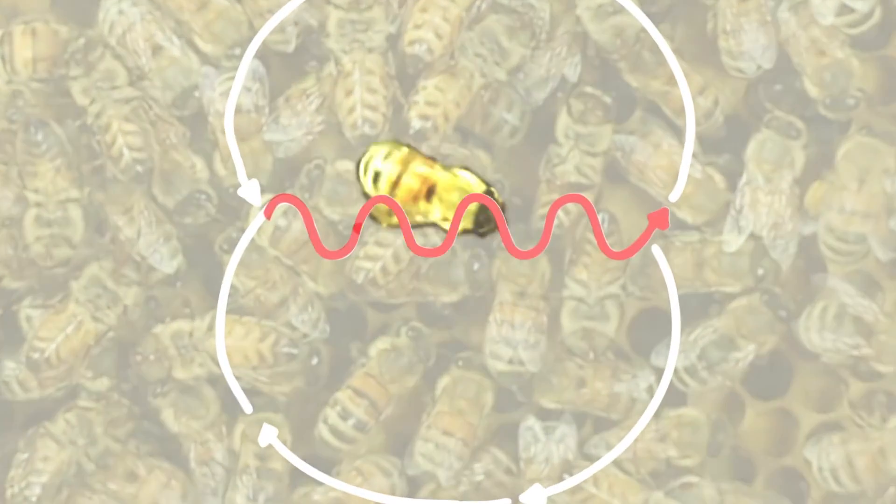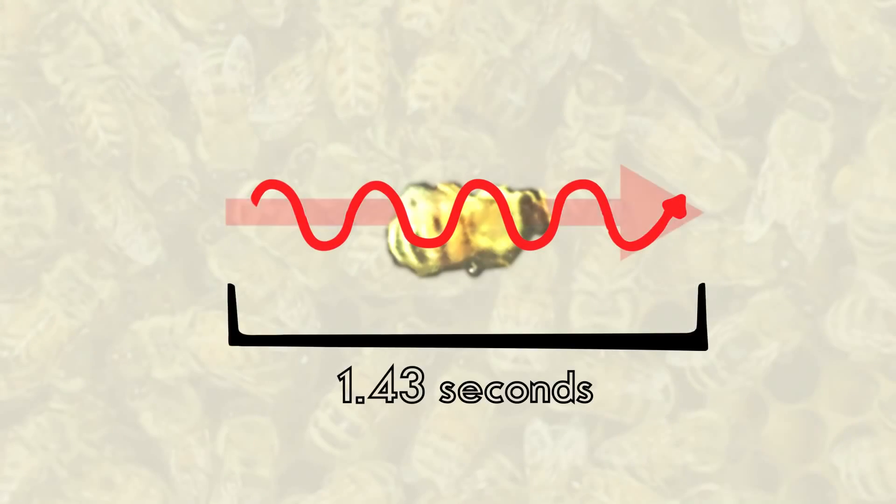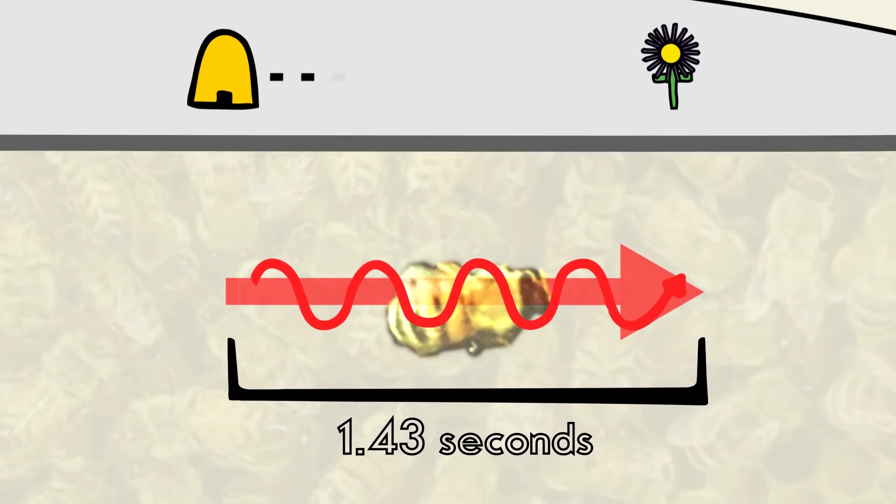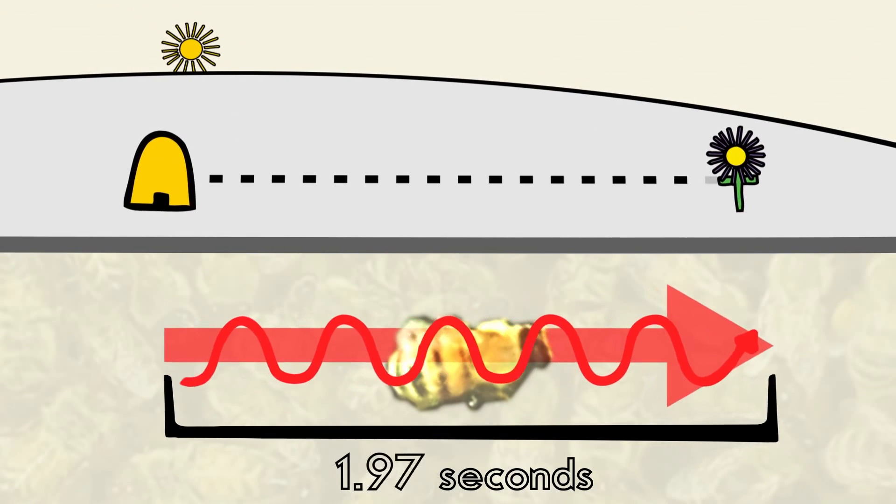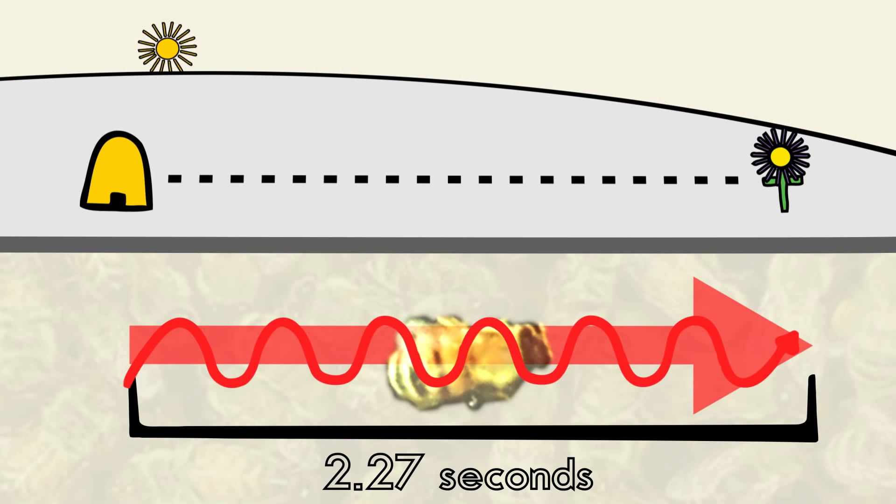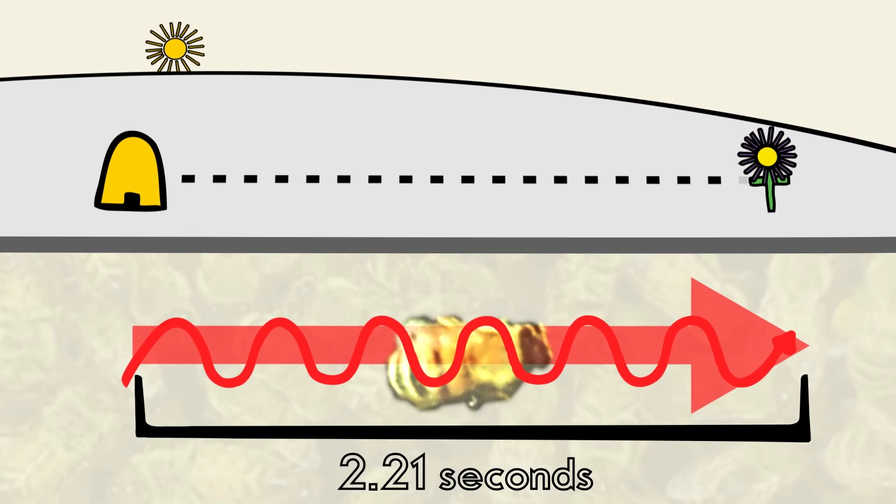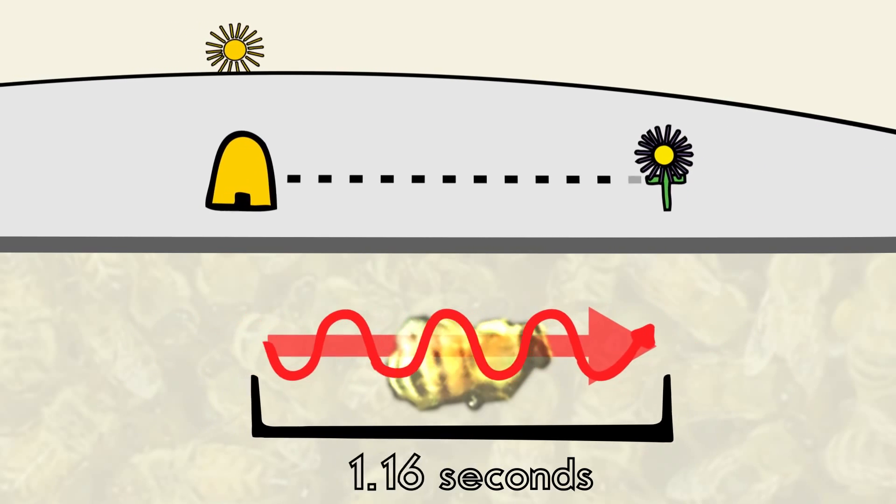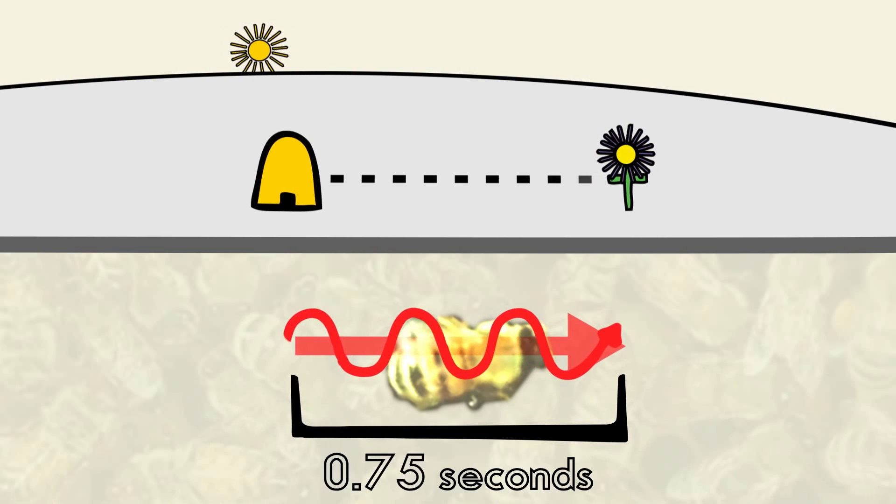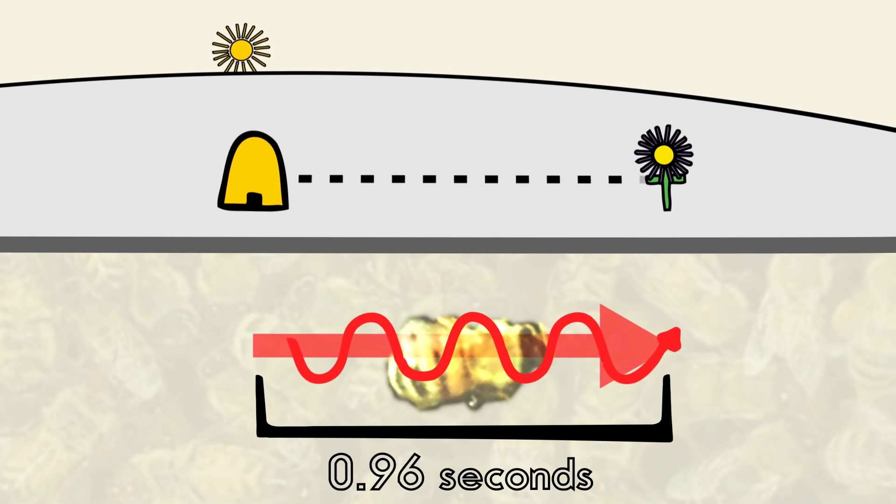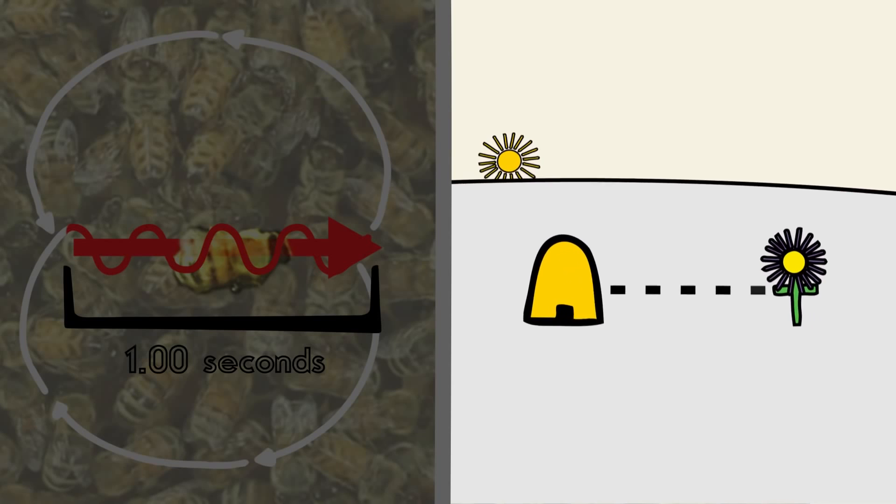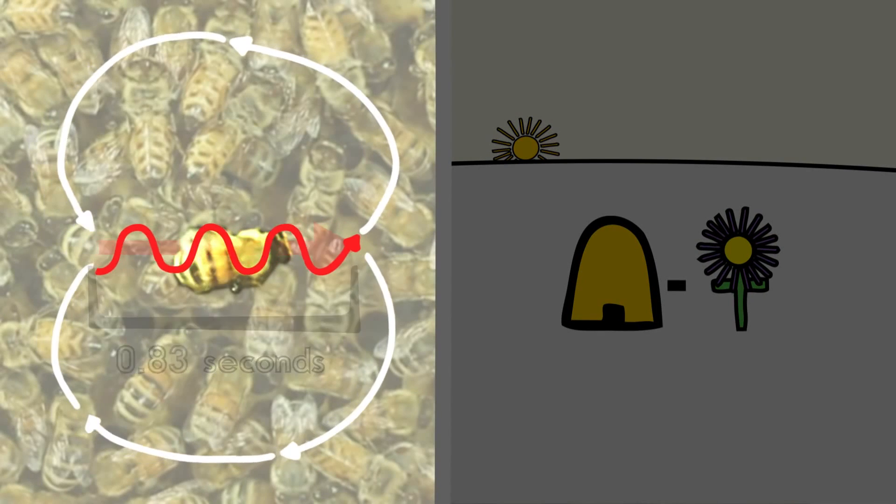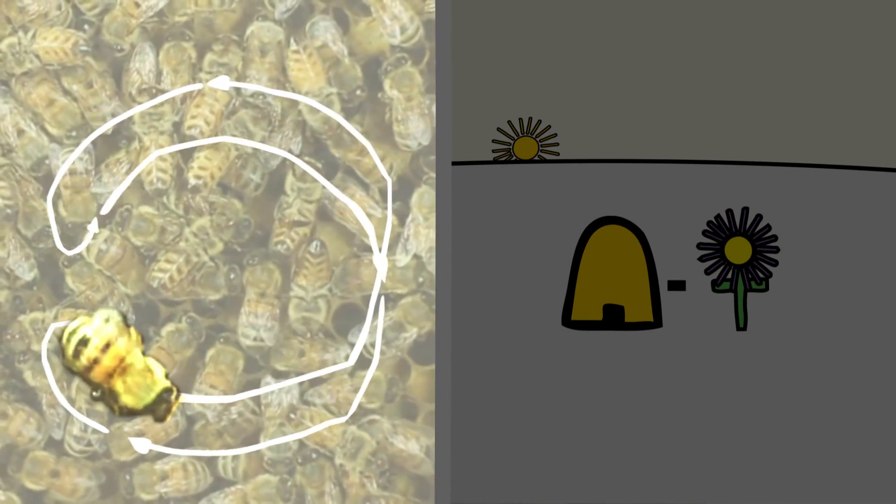The central waggle section of the bee's dance also contains information about the distance to a food source. Longer time spent in this part of the dance means that the food is further away. Shorter durations mean that the food is closer by. In general, a bee increases the duration of this section by one second for every kilometer of distance to the food. When food is within several meters of the hive, this central section of the dance will shrink, causing a circular dance.